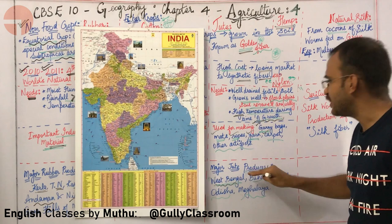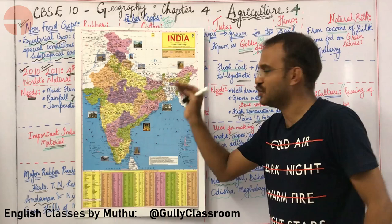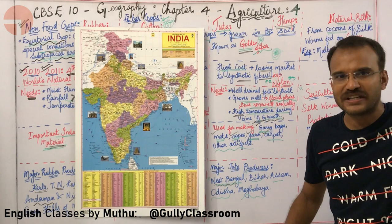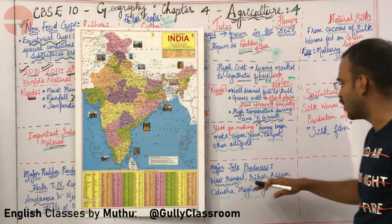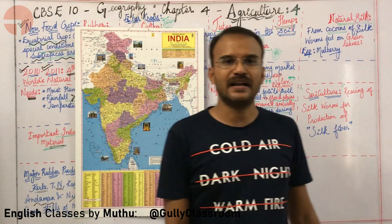Major jute producers are West Bengal, Bihar, Assam, Odisha, and Meghalaya — which also connects agriculture to the manufacturing industries chapter.